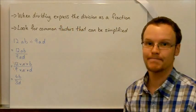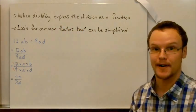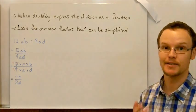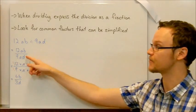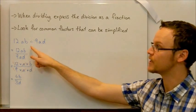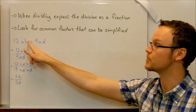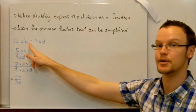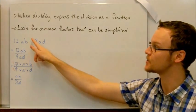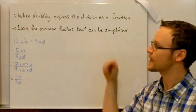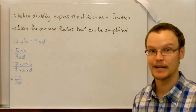So when we're dividing, we express the division as a fraction. It makes it much easier. The divide sign is exactly the same as using a fraction sign. The divide sign looks a bit like a fraction, with one dot being the numerator and the other dot being the denominator. Once we've done that, we can look for common factors that can make it simpler and simplified.